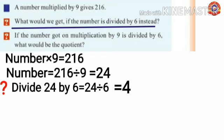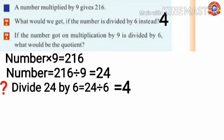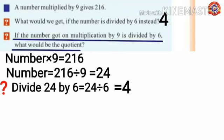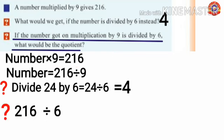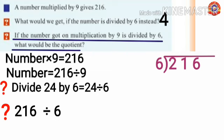What would we get if the number is divided by 6? The answer is 4. Next question: if the number got on multiplication by 9 is divided by 6, what would be the quotient? We know that the number multiplied by 9 equals 216. That 216 is to be divided by 6.